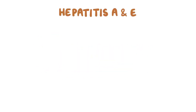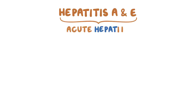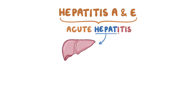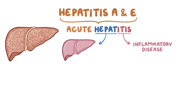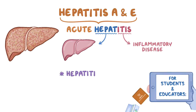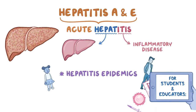Hepatitis A and E are two viruses that cause acute hepatitis. The name comes from the word 'hepat', meaning liver, and the suffix 'itis' to label inflammatory disease, meaning that hepatitis is an inflammation of the liver. They tend to cause hepatitis epidemics, especially in children and young adults.